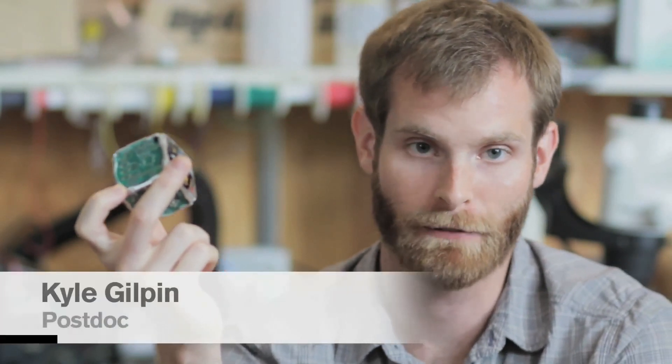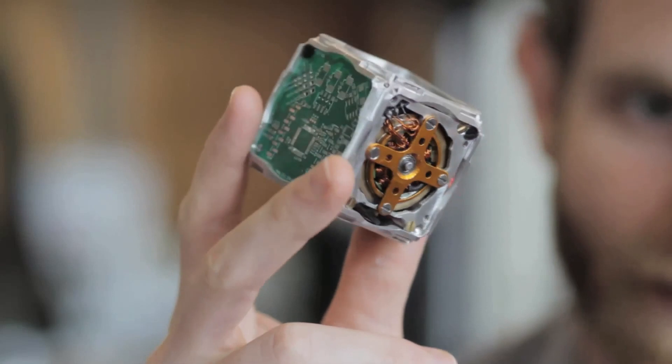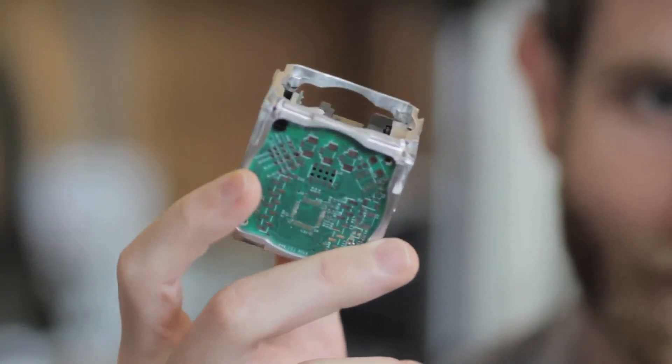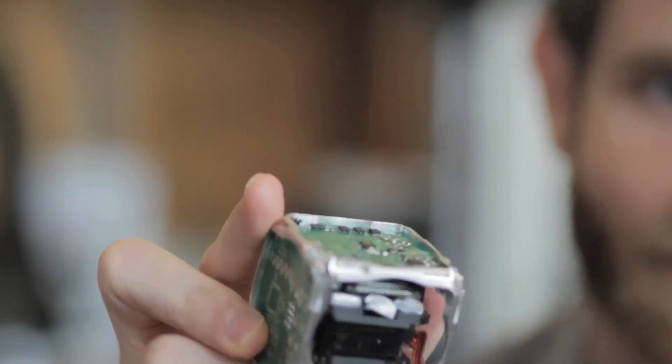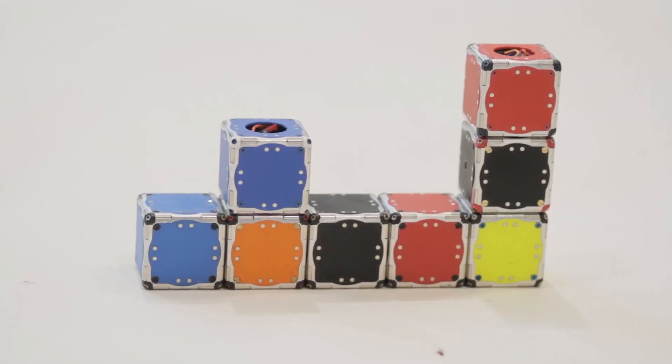So there were a couple of challenges when we came to design the M-Blocks. One was fitting everything inside. We have a relatively small volume and we needed to fit a brushless motor controller, a flywheel, a braking mechanism, electronics, a radio, a battery. Additionally, we faced the challenge of trying to simplify and make the design as robust as possible. So we didn't want any external moving parts, latches, or the cubes to change their shape. We just wanted simple blocks that were able to move on their own.